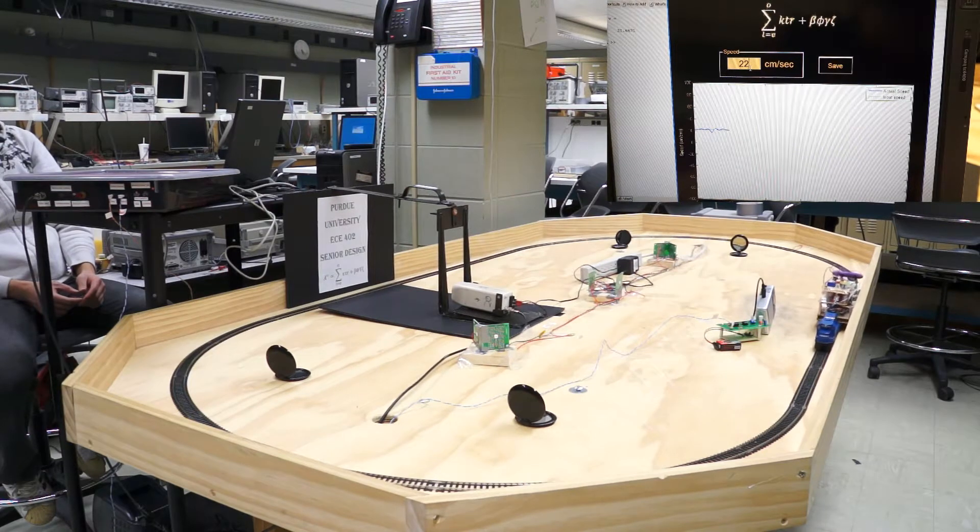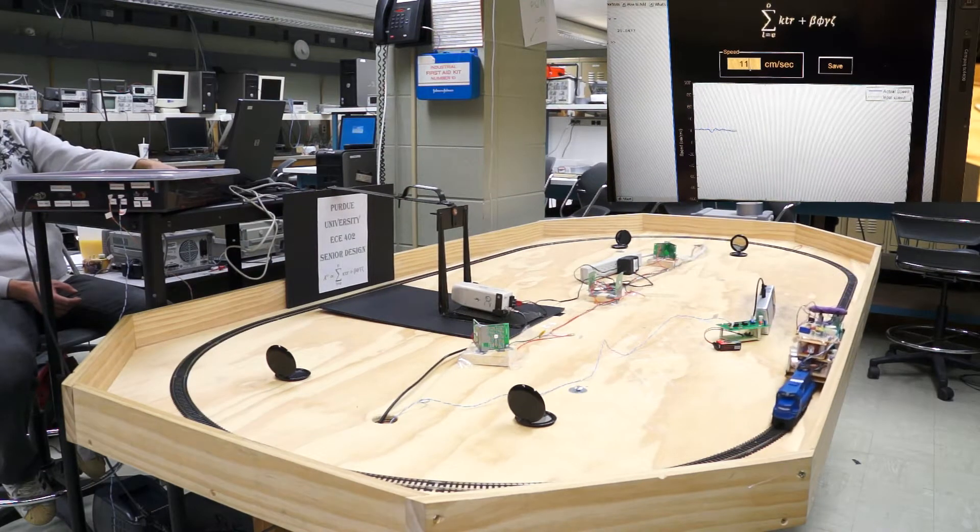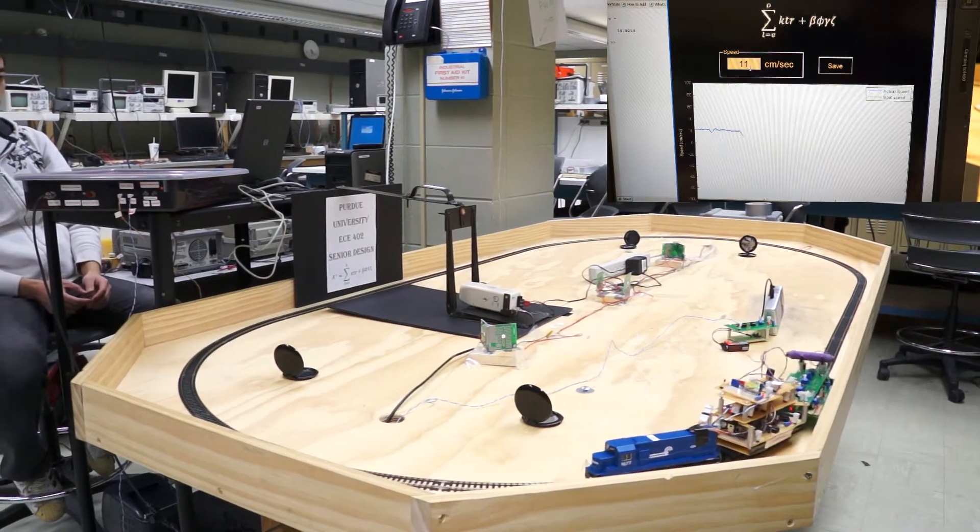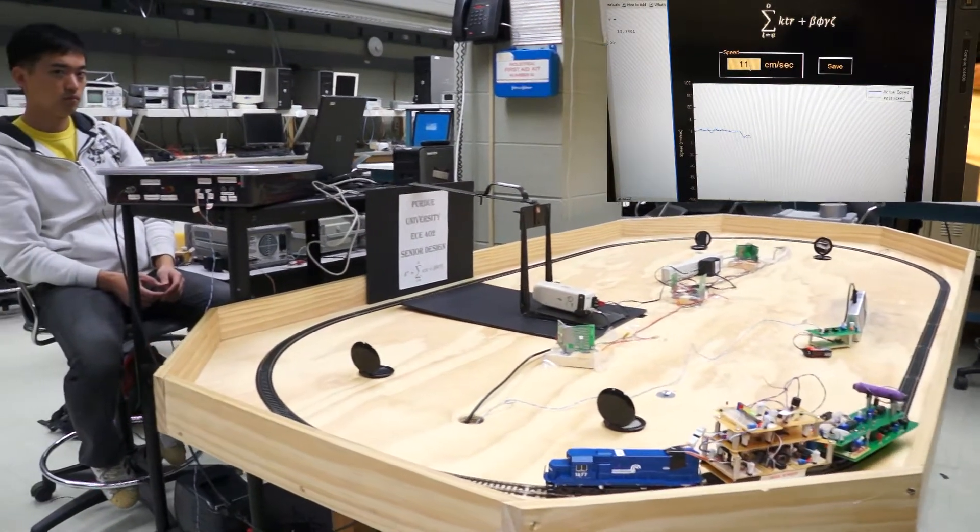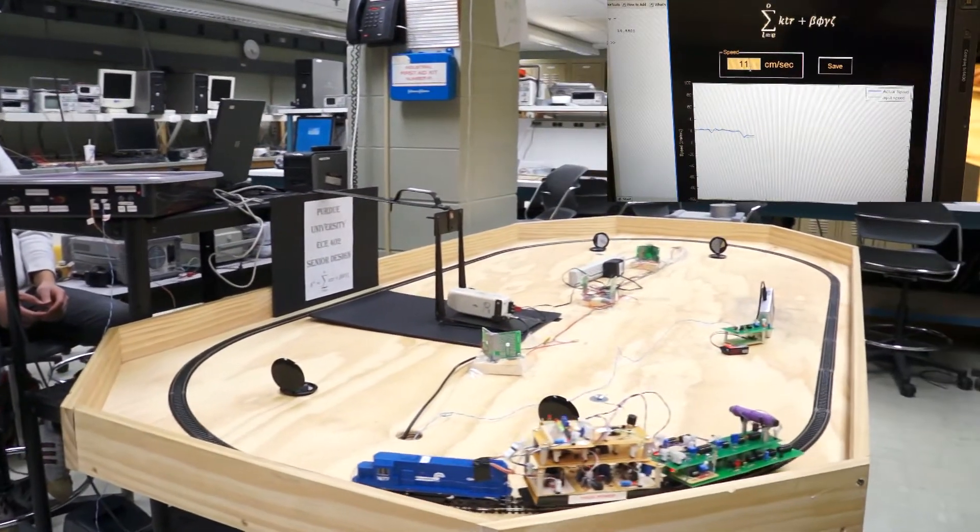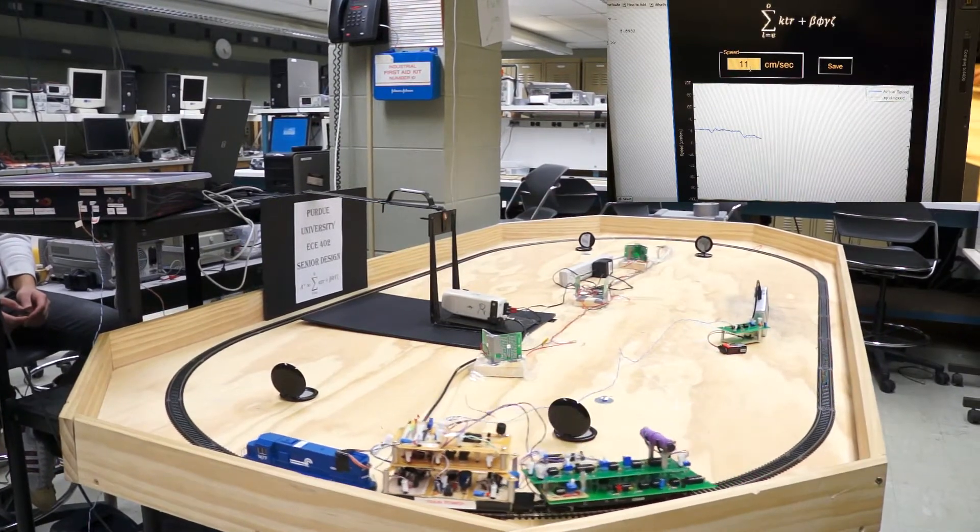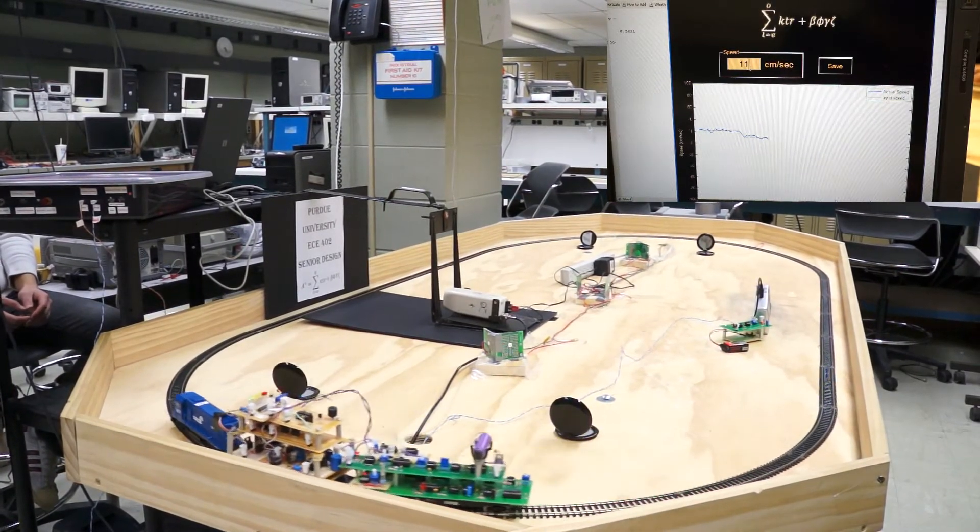Now, reduce the speed to 11 centimeters per second. As we can see in the user interface, the actual speed of the train is being received and compared to the desired speed by the cruise control subsystem.